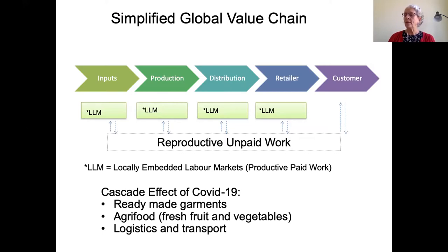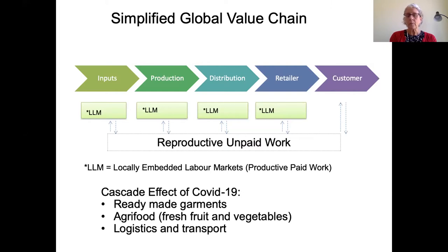From our research, firstly there's been a cascade effect. If we think of the value chain across inputs, production, distribution, retail through to the final customer, a disruption in one place can have a big effect at another point in the chain. This is particularly true for just-in-time value chains that operate on such tight margins. For example, disruptions to logistics and transport — containers getting stuck in China, passenger transport being hit and therefore freight that went in the hold of passenger planes was also hit.